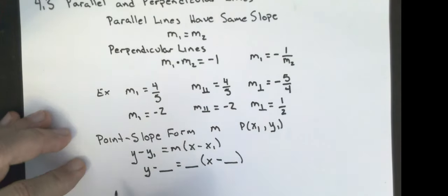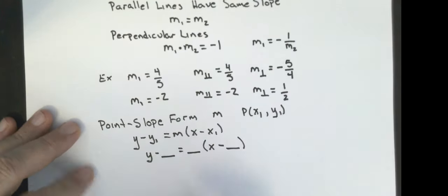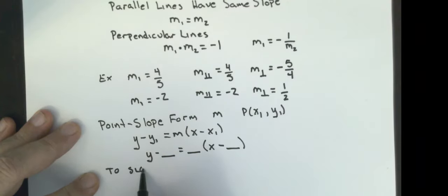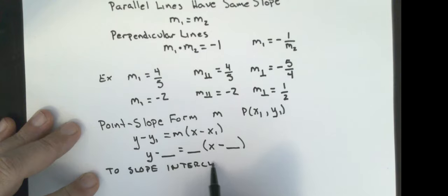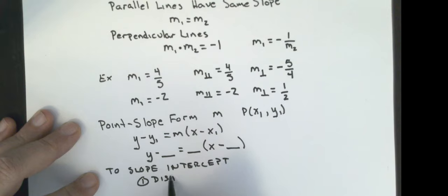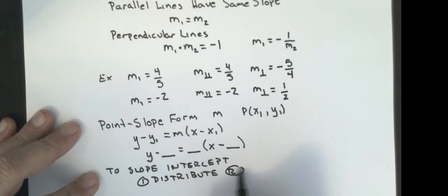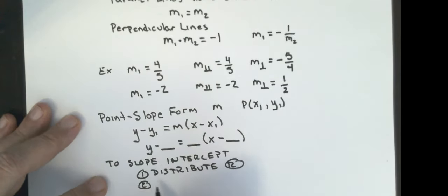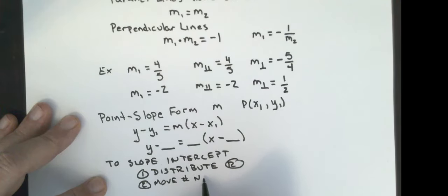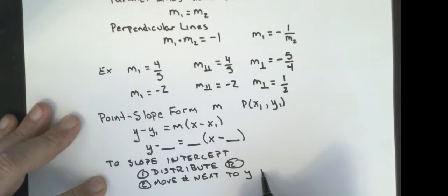If we need to put it into slope-intercept form, we always did two steps. Step one was to distribute the right-hand side. Step two was to move the number that was next to the y — we're going to move it to the right.